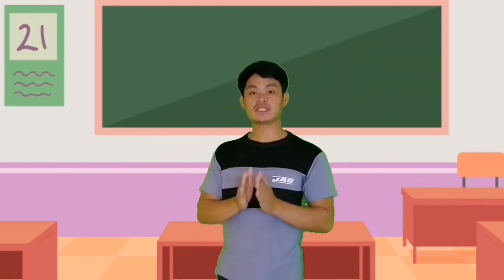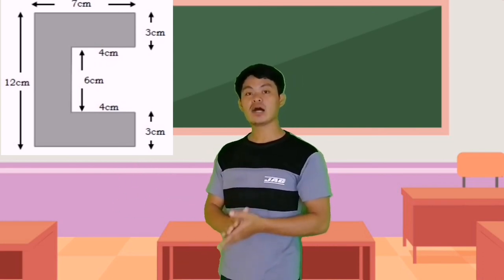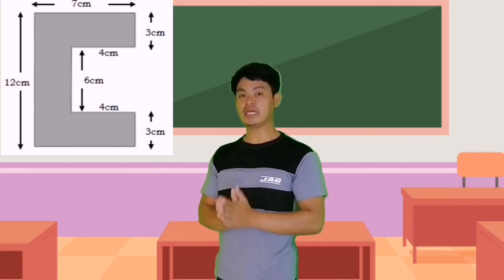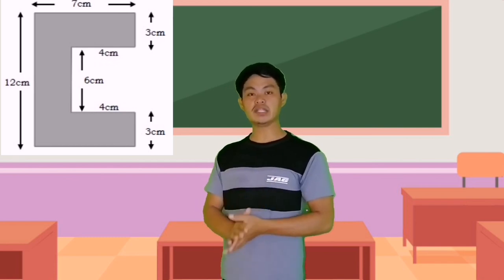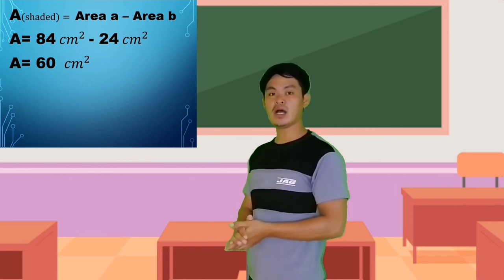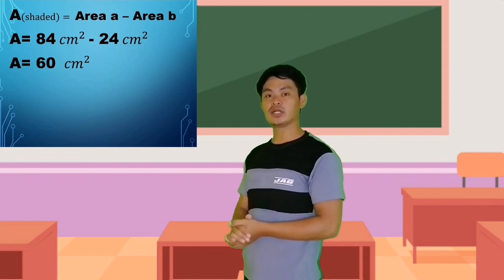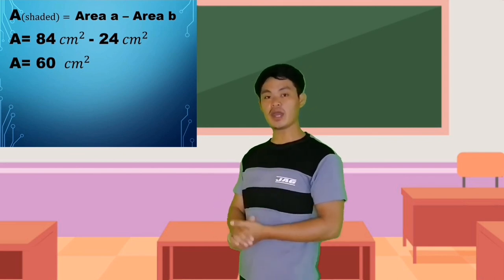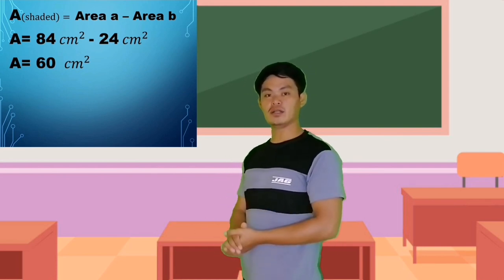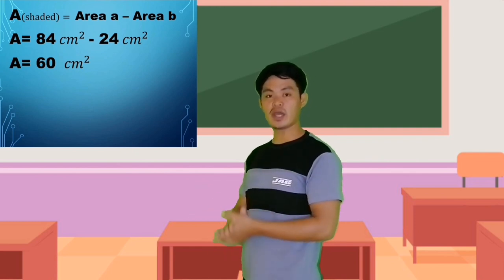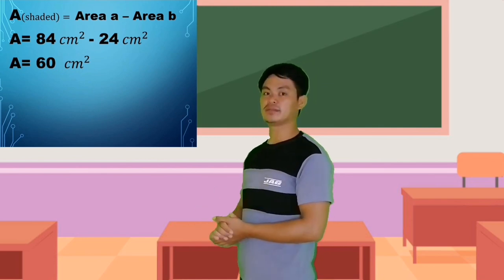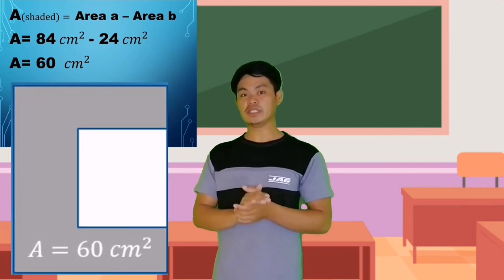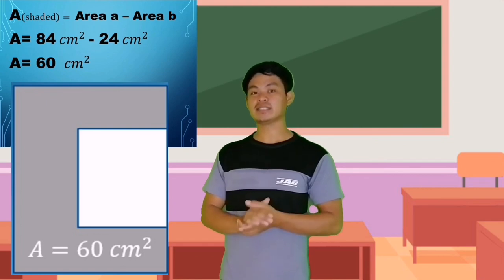To find the area of the shaded region, we subtract the area of the smaller rectangle from the area of the bigger rectangle. Area of the shaded region equals area of bigger rectangle minus area of smaller rectangle: 84 cm squared minus 24 cm squared equals 60 cm squared. Therefore, the area of the shaded region is 60 cm squared.